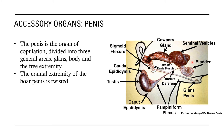We also have the penis, which is the organ of copulation — the organ of sex. When the boar mates with the sow, the penis is used. It is divided into three general areas: the glans, the body of the penis, and the free extremity. The cranial extremity of the boar's penis is twisted — it has a corkscrew shape that can clearly be observed during mating.